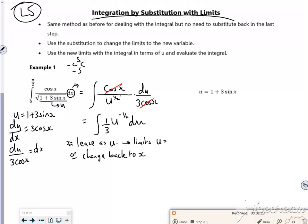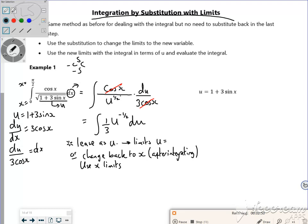After I've integrated it, use the original limits that I have because these are x equals limits. x equals 0 and x equals pi by 2. So I change back to x after integrating, and use the x limits. I've got a choice really of what I want to do. I think we'll use the u limits.